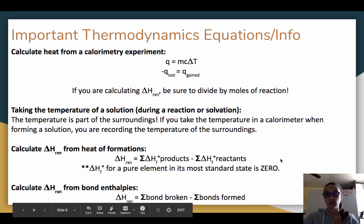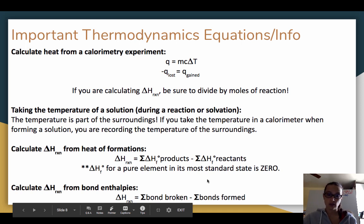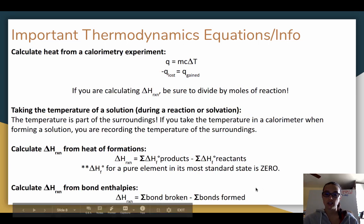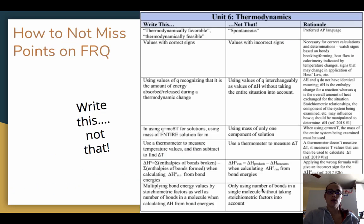To calculate delta H from bond energies or bond enthalpies, use: sum of bonds broken minus sum of bonds formed. Note that the bond energy equation is not on your equation sheet, so make sure you write it down so you have it available.